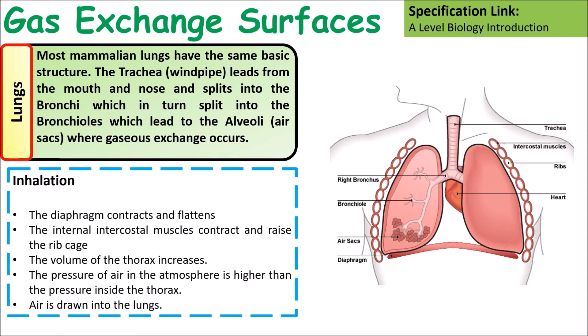The process of inhalation is where air is being taken in. The diaphragm contracts and flattens. The internal intercostal muscles contract and raise the rib cage. This increases the volume of the thorax, therefore lowering the pressure, so air is drawn into the lungs.